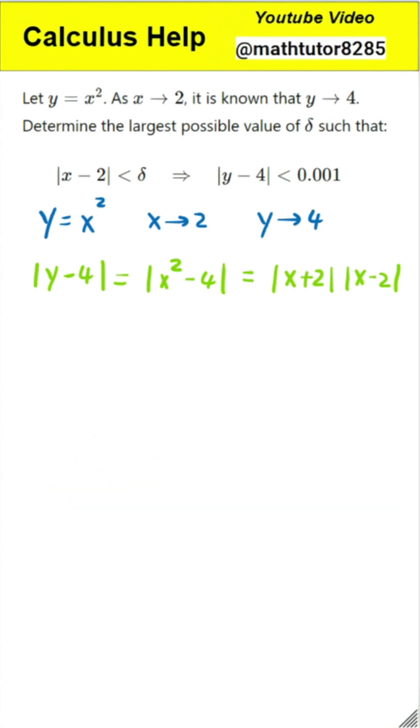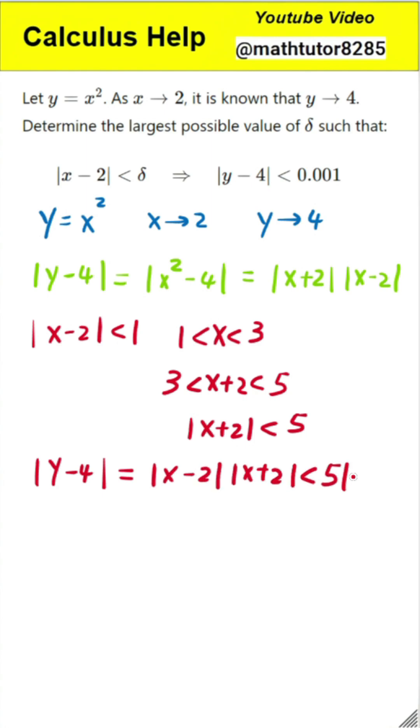Step 3: Controlling the range of x. To manage the value of x+2, we assume that the distance between x and 2 is less than 1. This means x is somewhere between 1 and 3, so x+2 must be somewhere between 3 and 5. Therefore, the value of x+2 is guaranteed to be less than 5. This allows us to say that the distance between y and 4 is less than 5 times the distance between x and 2.